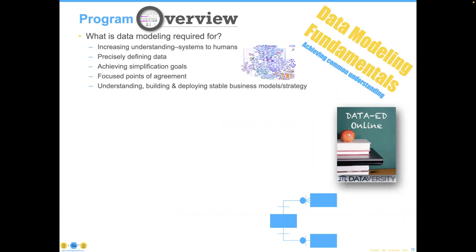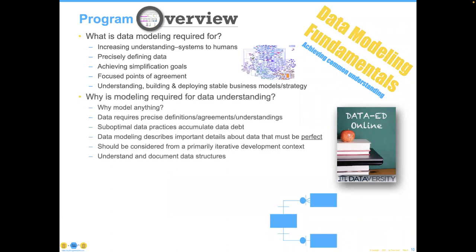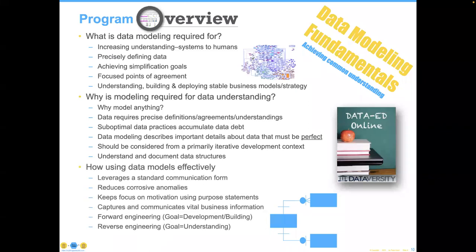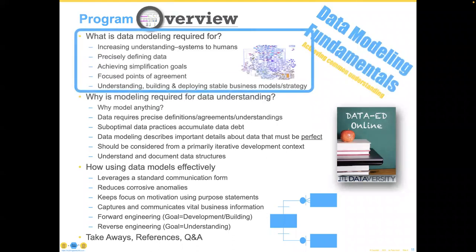We're going to do this in three big parts. The first is: what is data modeling required for? We'll talk about very specifics there. Then: why is data modeling required for understanding? The answer is that if you don't have a data model, you truly do not understand the way it needs to be understood. And then: how to use data models effectively. Then Shannon and I get to parse your questions. So what is data modeling required for? We're going to talk about increasing understanding between systems and humans, precisely defining the data, achieving simplification goals, getting to focused points of agreement, and understanding, building, and deploying stable business models as part of strategy.